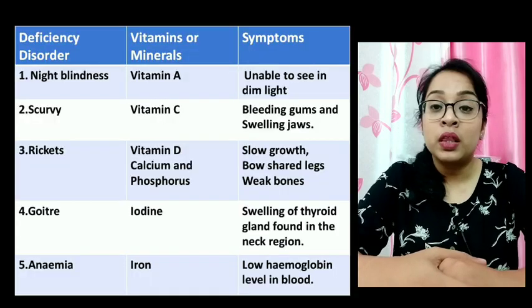Non-communicable diseases are those which cannot be spread from an infected person to a healthy person. This type of disease may be caused due to deficiency of certain nutrients in your diet or due to improper functioning of your body parts or organs. Let us first discuss deficiency diseases — those diseases which are caused due to lack of certain nutrients. We will concentrate mainly on deficiency diseases caused by lack of vitamins and minerals.